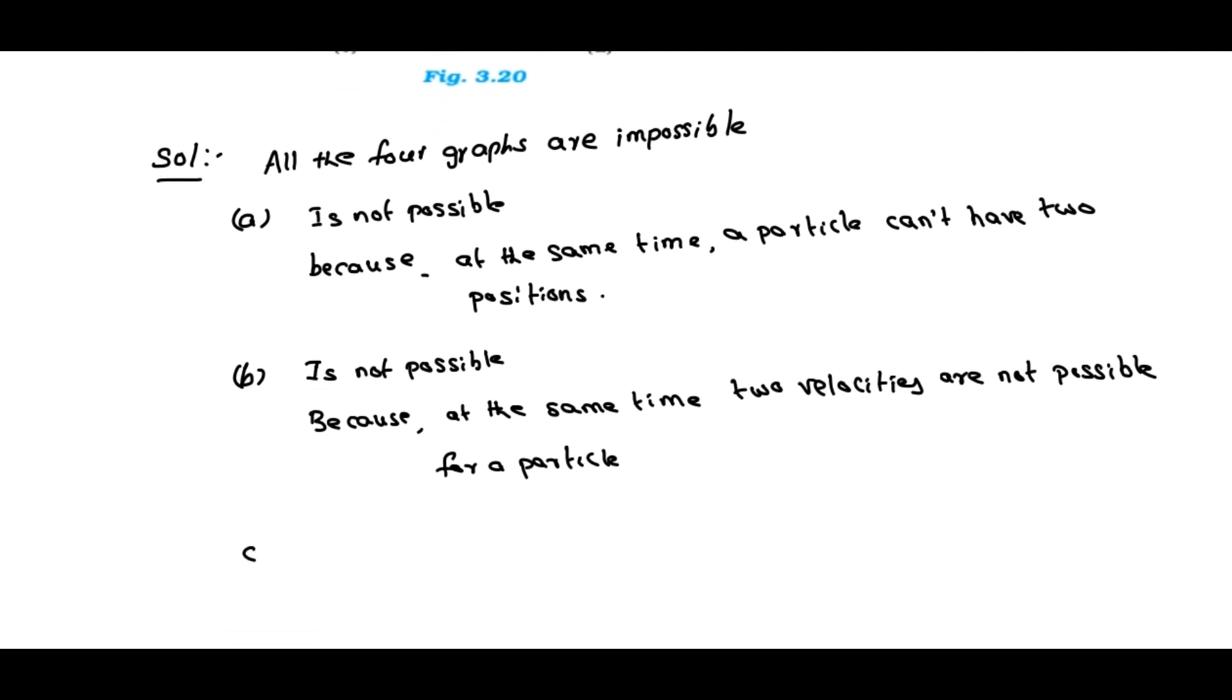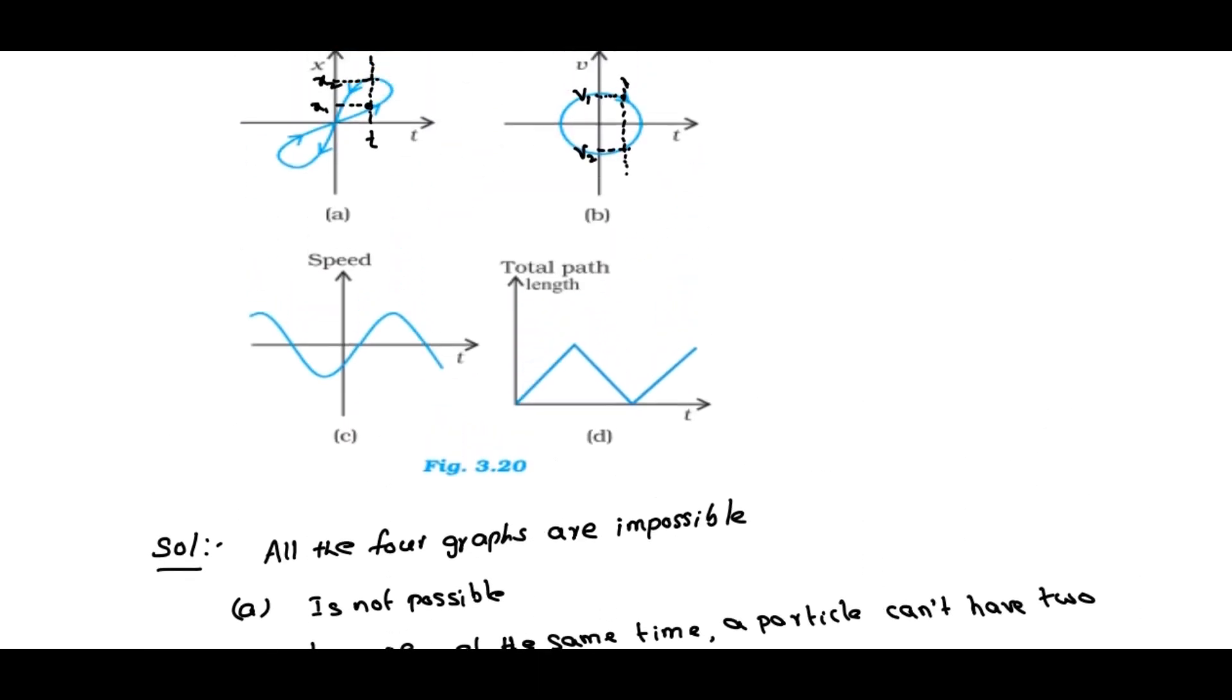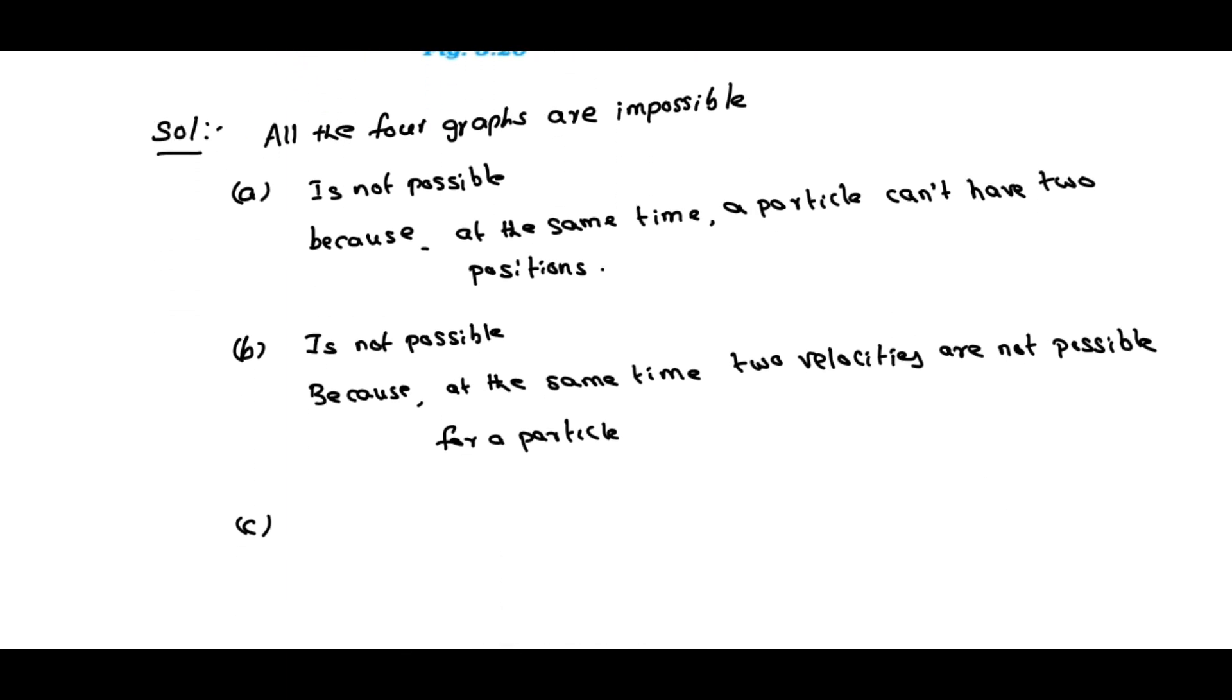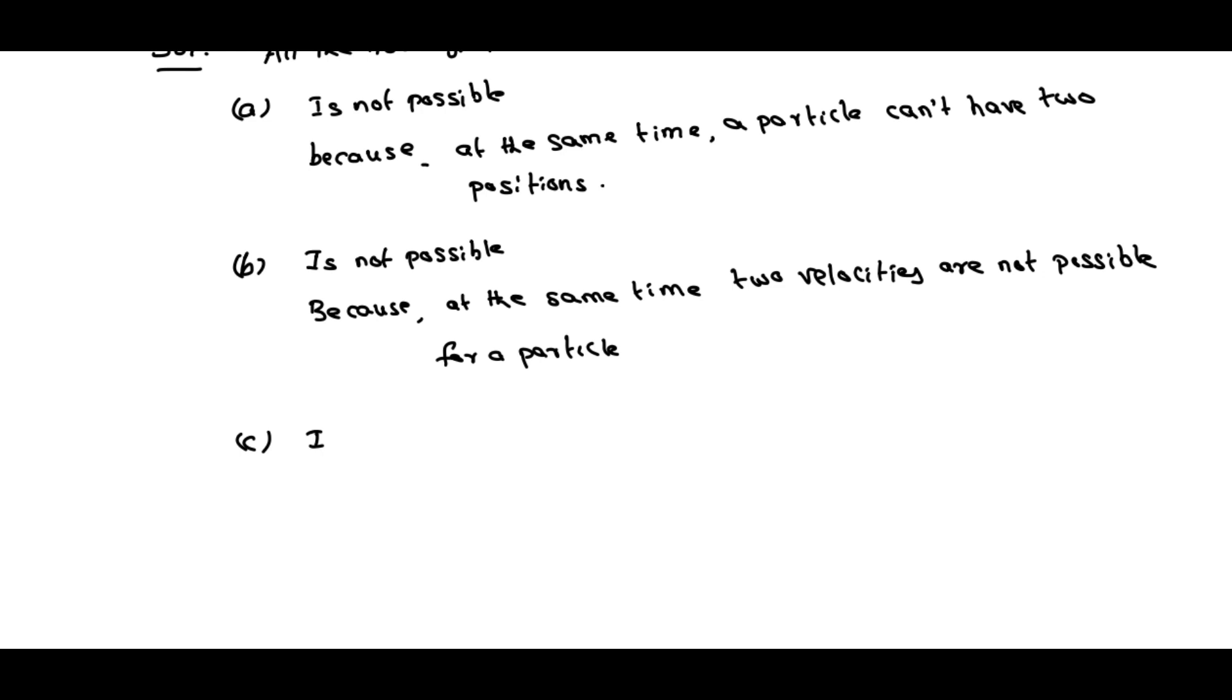Coming to C. If you observe graph C, it is a speed versus time graph. In the speed versus time graph, above time axis, the speed is positive. Below time axis, the speed is negative. But actually, the speed can't be negative. That's why the graph is not possible. Graph C is not possible because the speed of the particle cannot be negative.